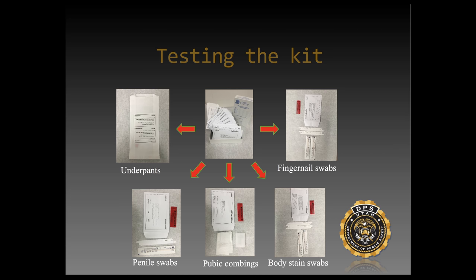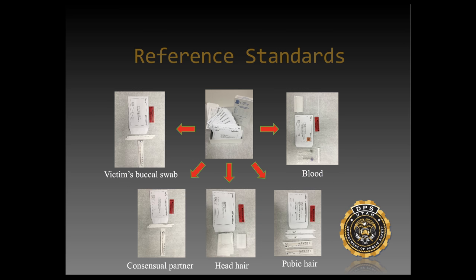Finishing counterclockwise, we come to fingernail swabs — swabbing from underneath the fingernails. This represents a secondary tier of testing. If the victim scratched or came into rough contact with the suspect, and there's an indication that there might be debris or skin cells from the suspect under the fingernails, we ask the nurse to swab underneath those fingernails, retain that sample, and test it. As you can see, there are quite a few envelopes and a lot of different evidence included in this box, and hopefully I've given an idea of the complexity of the testing.